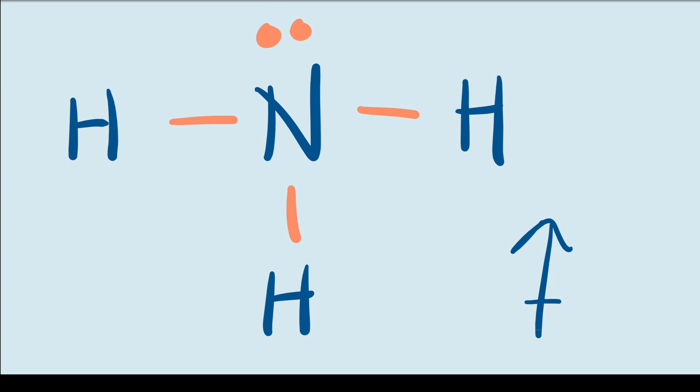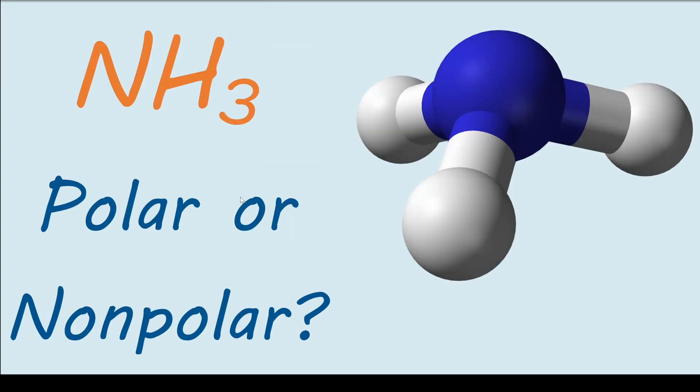The nitrogen atom is pulling on the electrons that it shares with the hydrogen atoms, plus it has its own electron pair. All together, this makes ammonia a polar molecule.